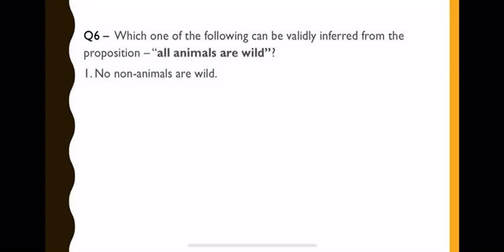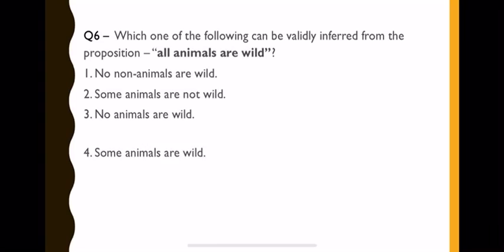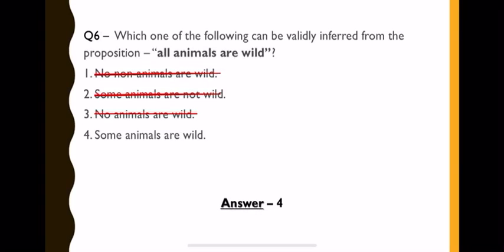Question sixth: which one of the following can be validly inferred from the proposition? The proposition says all animals are wild, meaning all animals are wild. Your inference or conclusion should be drawn from four options, one of which is correct. First is no non-animals are wild. How is that possible? This can never be inferred from this statement. Second says some animals are not wild, which is also not true. Third says no animals are wild, but the proposition says all animals are wild. So definitely your answer is option fourth: some animals are wild.